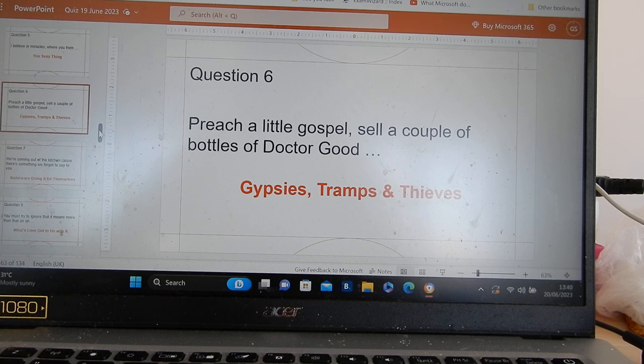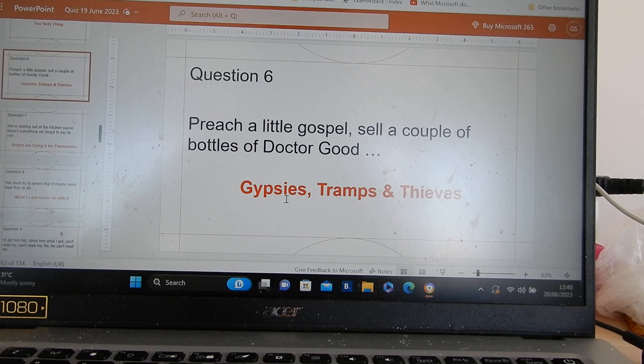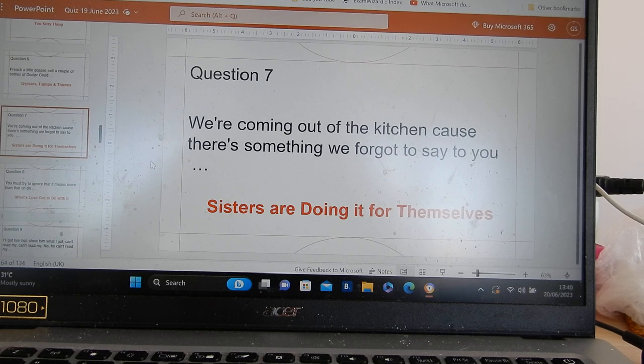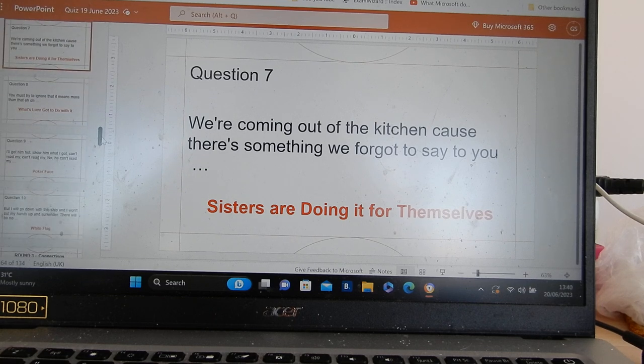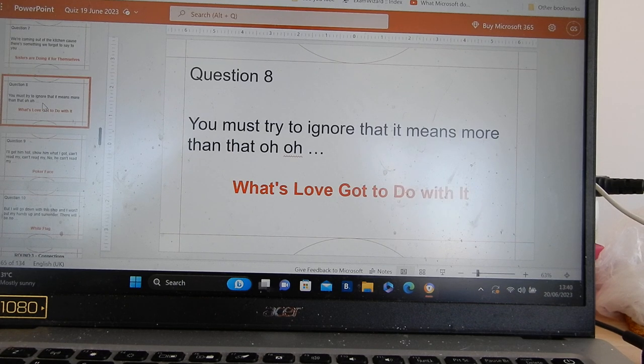And from Cher. Preach a little gospel. Sell a couple of bottles of Dr. Good. Gypsies. Tramps and thieves. Most people smell gypsies wrong. And lose a mark. We're coming out of the kitchen. Because there's something we forgot to say to you. Sisters are doing it for themselves. Every word for two marks.